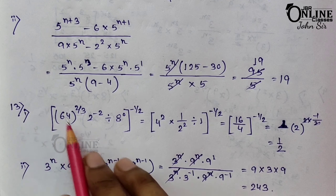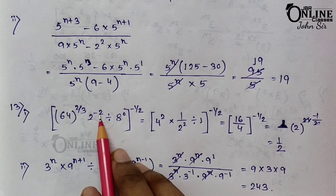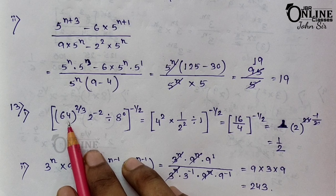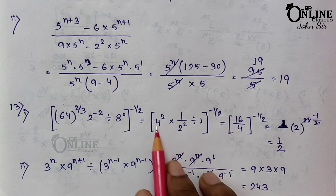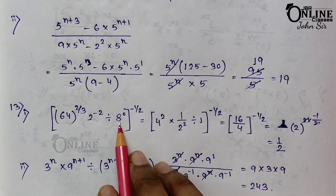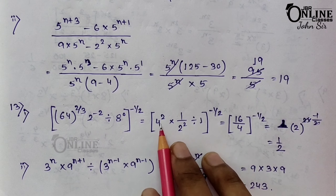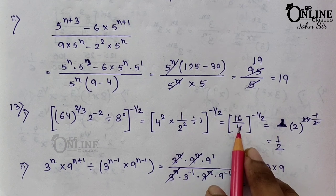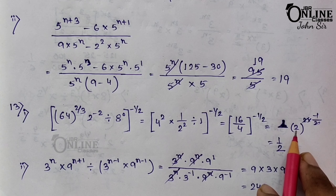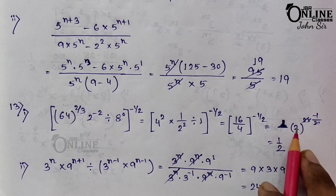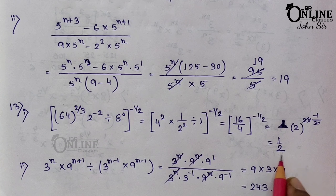Sum 13.1: [64^(2/3) × 2^(−2) ÷ 8^0]^(−1/2). Here 64 = 4^3 so 64^(2/3) = 4^2 = 16; 2^(−2) = 1/4; 8^0 = 1. So we have 16/4 = 4, and 4^(−1/2): since 4 = 2^2, that gives 2^(−1) = 1/2.